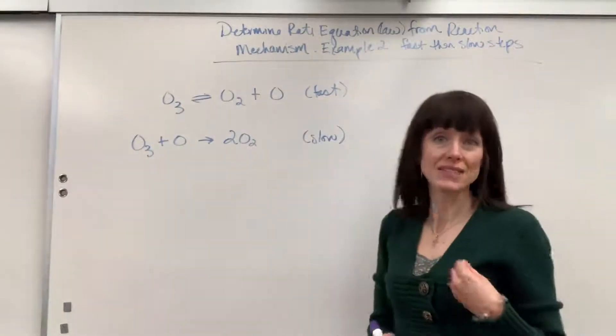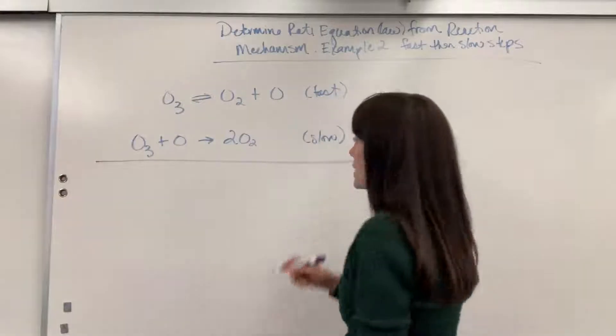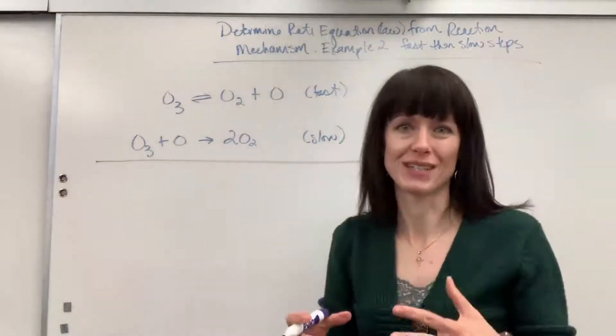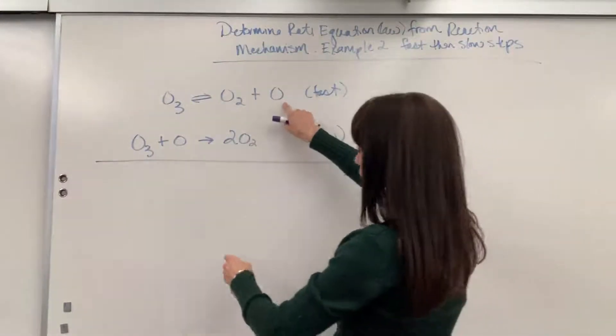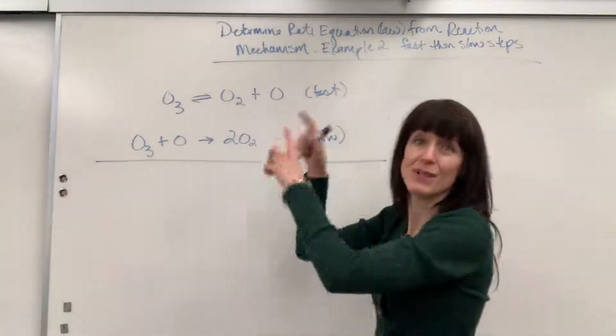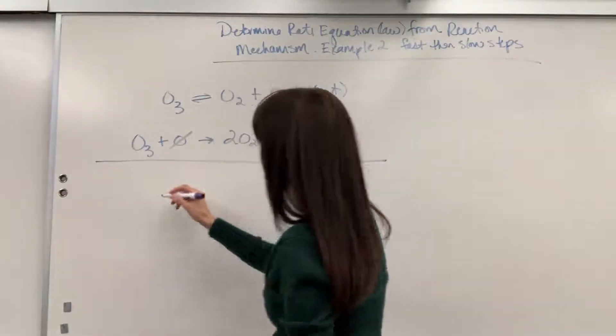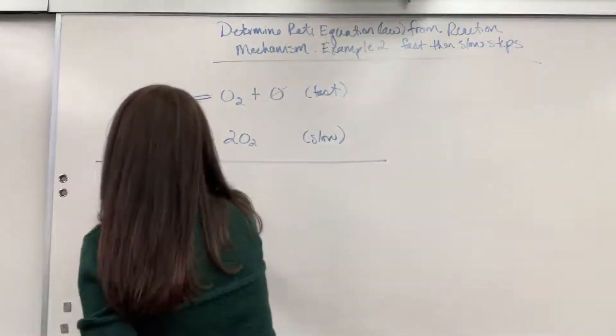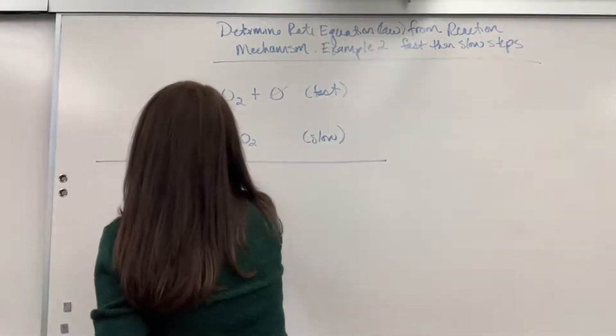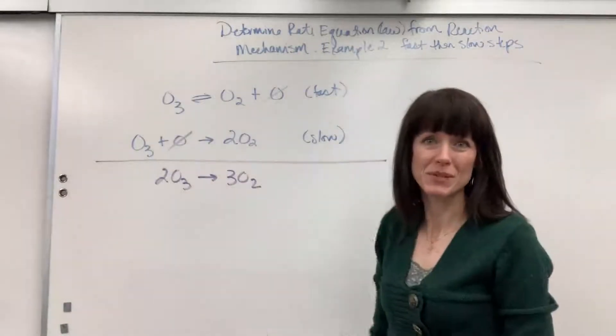Okay, I'm going to add this together to get the overall reaction. And you'll recall that the overall reaction is the true reaction in nature, what we observe. So as we add this together, I see an oxygen and an oxygen. One's on the reactant, one's on the product. So these will cancel. When I add everything else together, we are going to get 2O3 yield 3O2. And that is what we observe in nature.